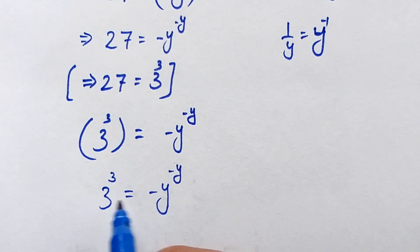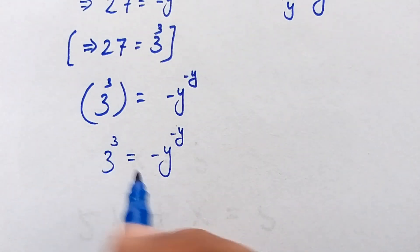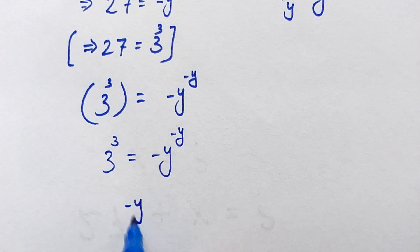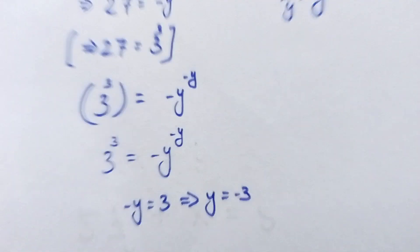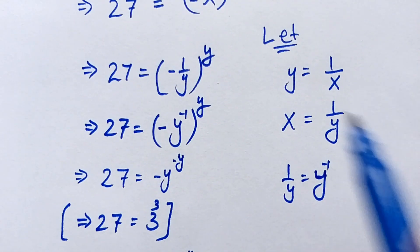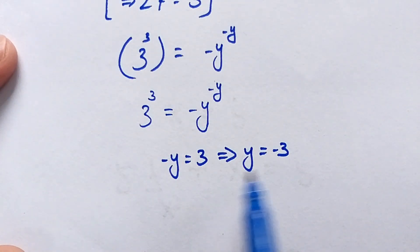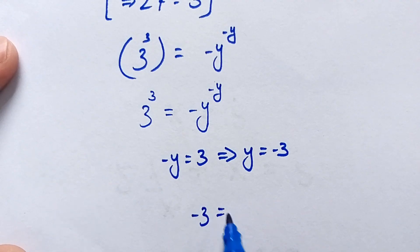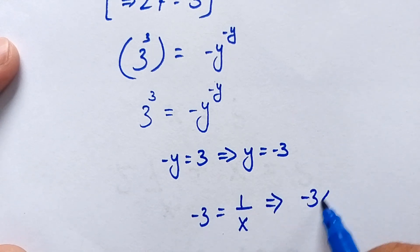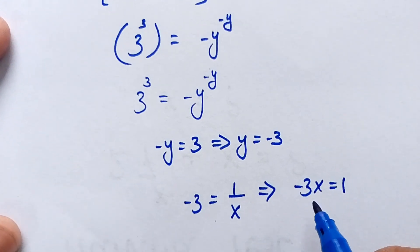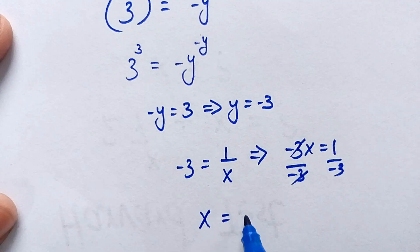When we compare both sides, we know that minus y is equal to 3. From this we conclude that minus y equals 3, and finally y is equal to minus 3. Now, we know that y is equal to 1 over x, so putting y equals minus 3: minus 3 is equal to 1 over x, and finally this becomes minus 3x is equal to 1. Dividing both sides by minus 3, x is equal to minus 1 over 3.